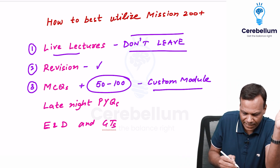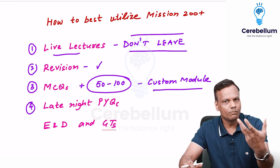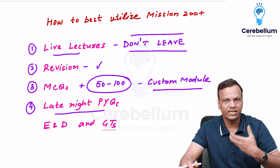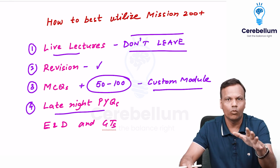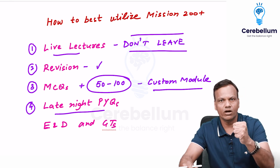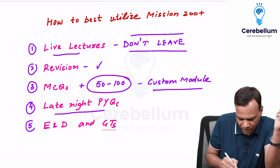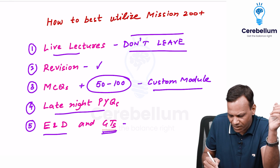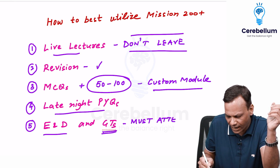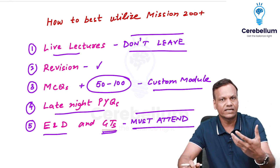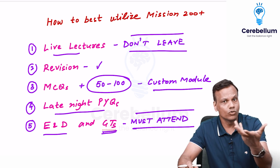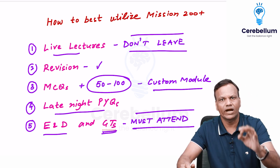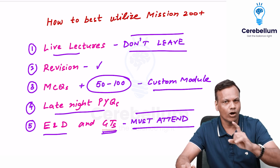Daily, do 50 to 100 MCQs. Every day in the Cerebellum app, we will be giving late night PYQs — specifically pharmacology PYQs for the next four to five days while I am taking the classes. Start solving them right now so that you have a strong grip on the PYQs. Most importantly, all the Exam and Discussion tests and all the grand tests — you must attend every one of them. Do not leave any test thinking that if your marks are less you will get demotivated. Keep on attempting; only then will you come to know about your mistakes.